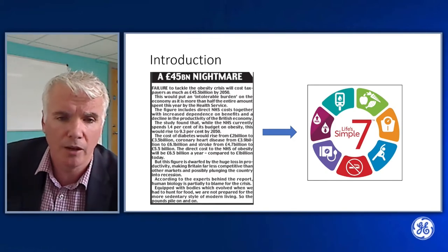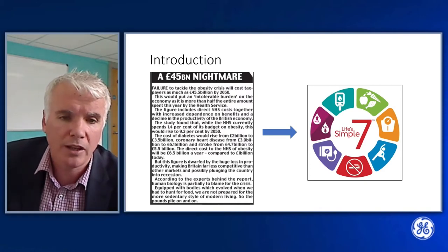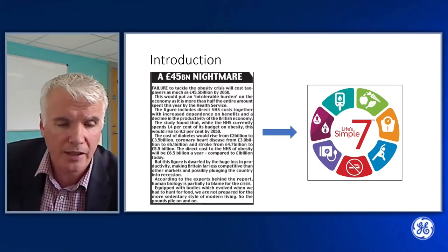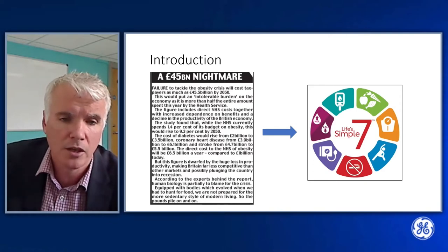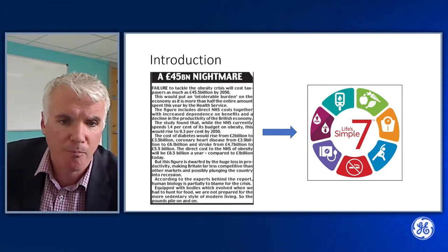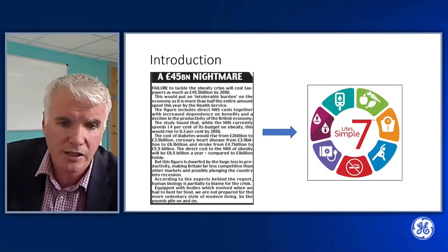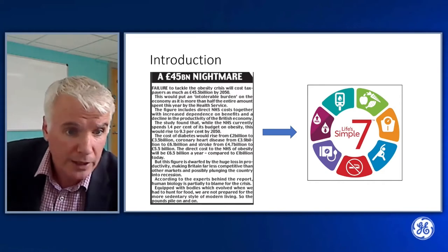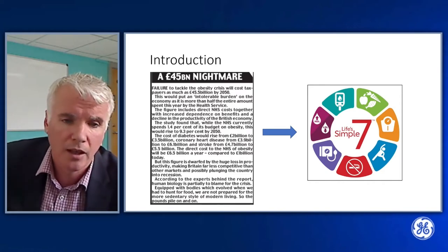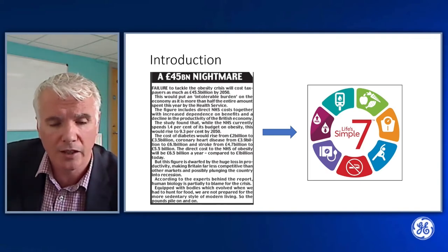I was struck just the other day when I read an article in a local broadsheet paper that really articulated the challenge that we face over the course of the next 25 years. The title was '45 Billion Nightmare,' and it's really talking about the prevalence of obesity and the tsunami of heart disease, cardiovascular disease, and diabetes that we here in the United Kingdom, who have a public health sector, are going to face if we don't start to meet the challenge.